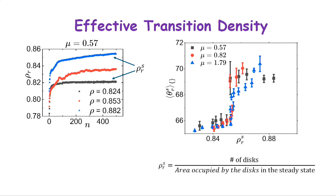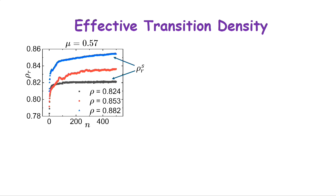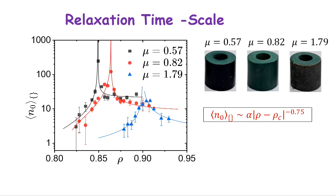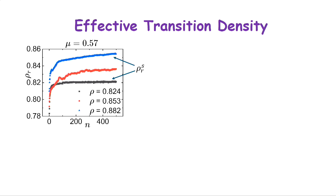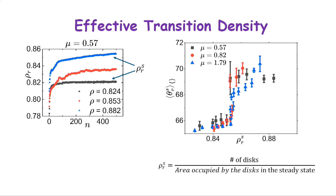You can track rho-r as a function of n, which saturates to different densities depending on friction. These saturation densities are the density in the relaxed-out state. If you use these saturation densities on the x-axis instead of the maximum compressed state densities, all the curves collapse to a particular number of about 0.85. The effect of friction is to prevent the system from accessing that particular density.